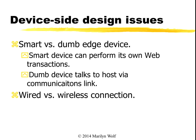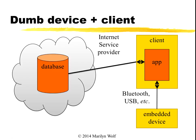We also have to think about what type of network connection we're going to use — wired versus wireless, Wi-Fi, Bluetooth, or Zigbee. Those decisions affect power consumption and also what chips and boards we need to use. In a dumb edge device architecture, we have our embedded device communicating via Bluetooth, USB, or some other connection to a client machine. That client machine runs an app that talks on one hand to the embedded device and on the other hand to the cloud. So in addition to developing the embedded device, we also have to develop the app.